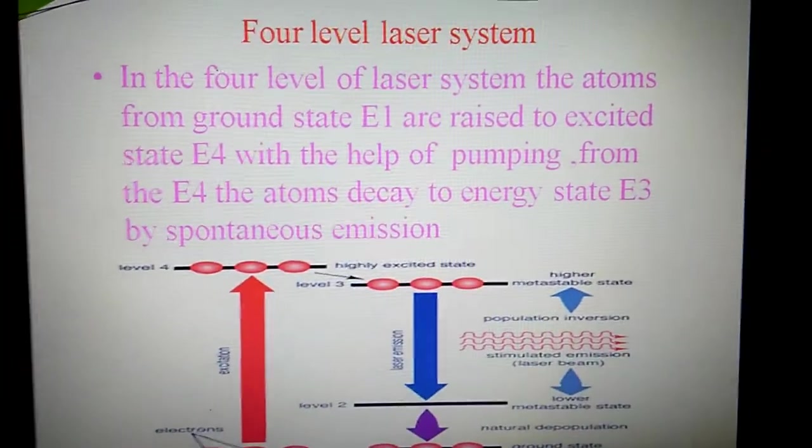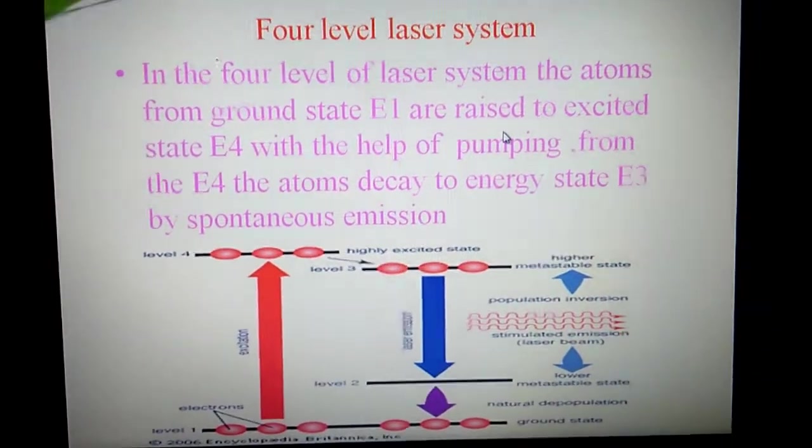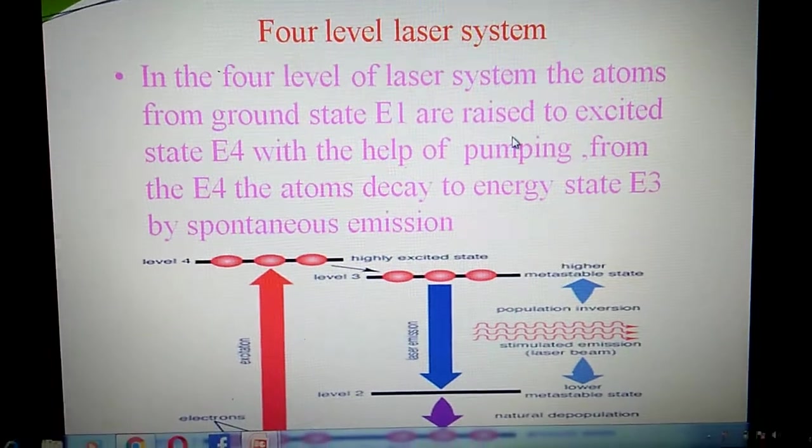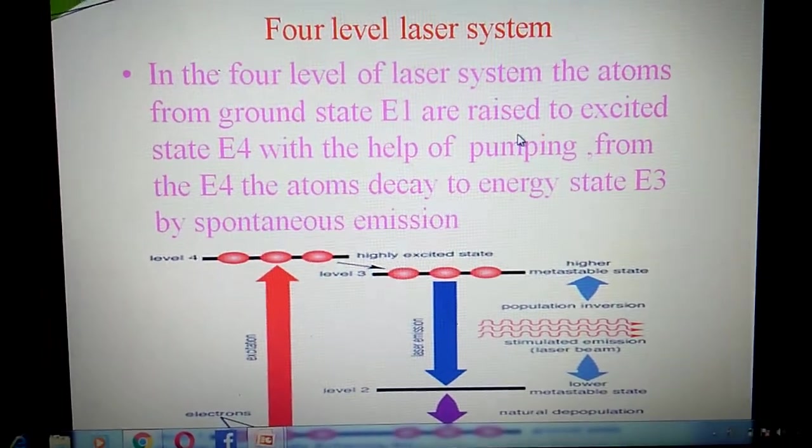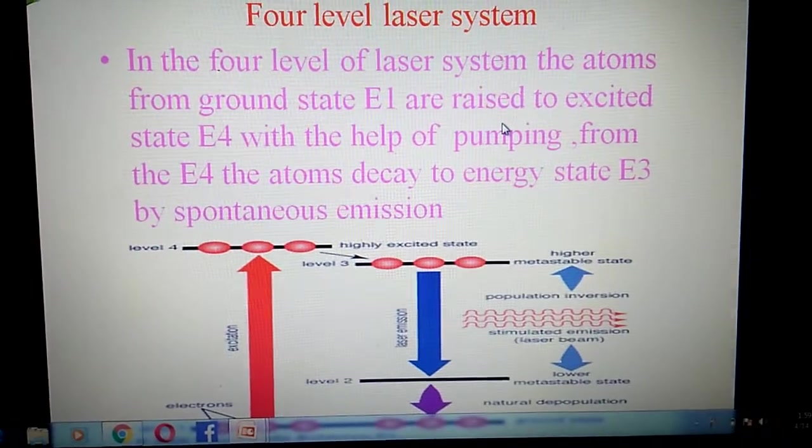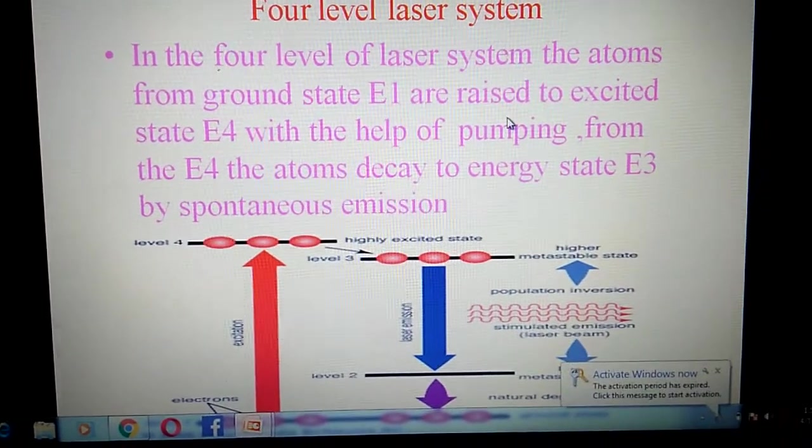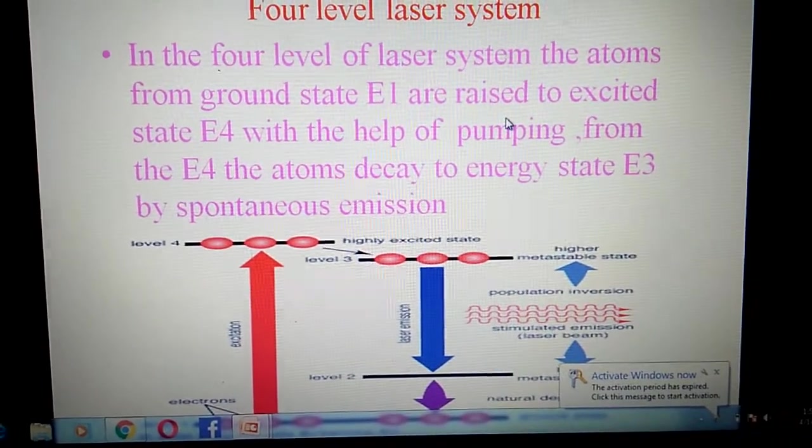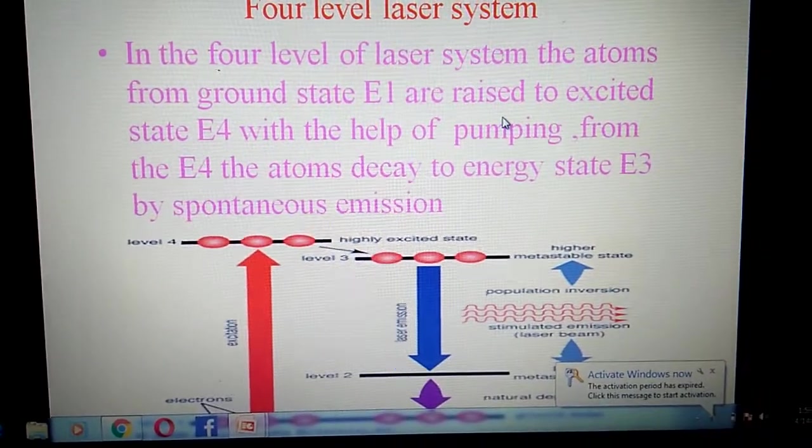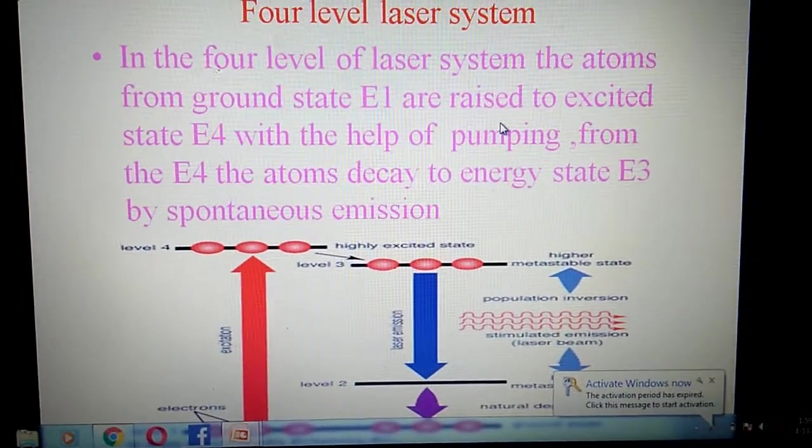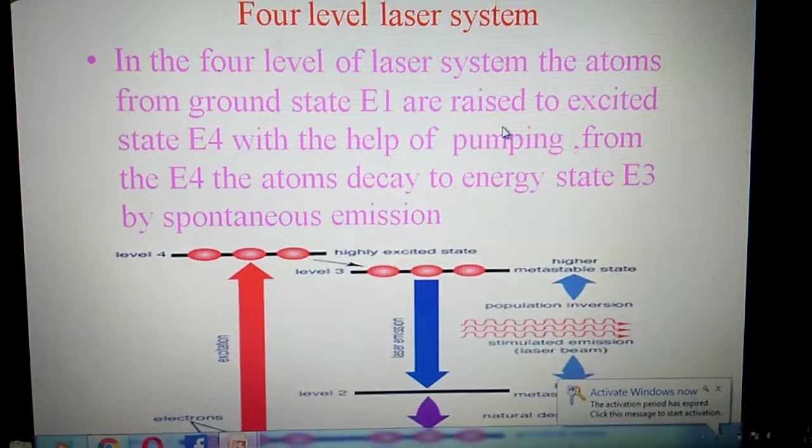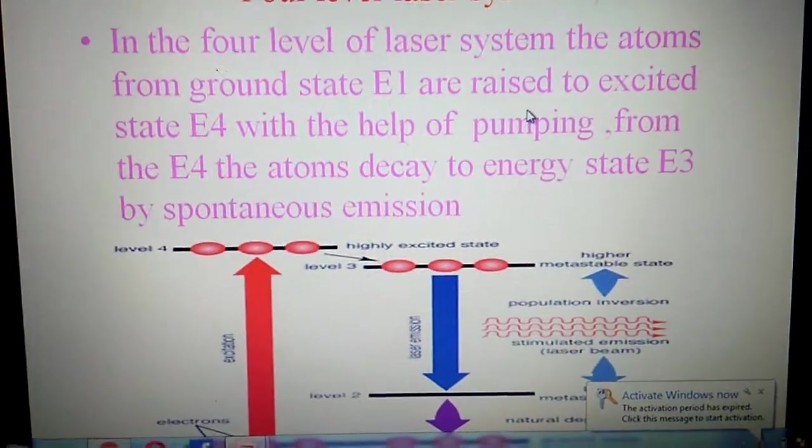The efficiency of 4 level laser system is more than that of 3 level laser system. Now, the second scheme is the 4 level laser system. In 4 level laser system, the atoms from ground state E1 are raised to excited state E4 with the help of pumping. From E4, the atoms decay to energy state E3 by spontaneous emission.